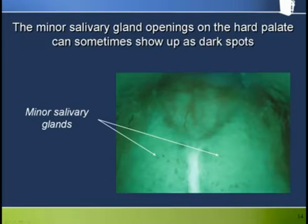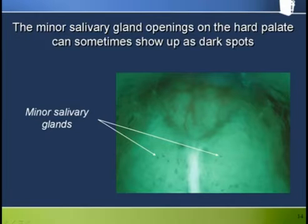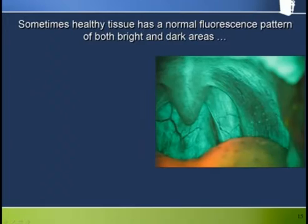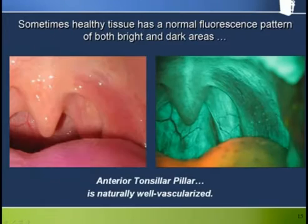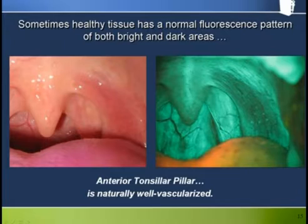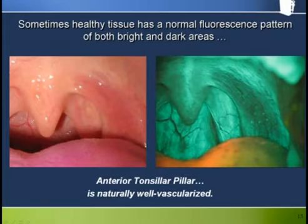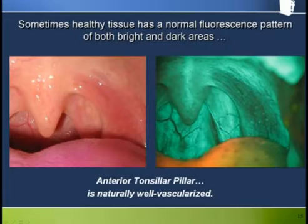The minor salivary gland openings on the hard palate can sometimes appear as dark spots when using Velscope. The anterior tonsillar pillars can be particularly well vascularized and therefore can appear quite dark with fluorescence. Notice how the reddened areas under white light correspond to the darkened areas through the Velscope.